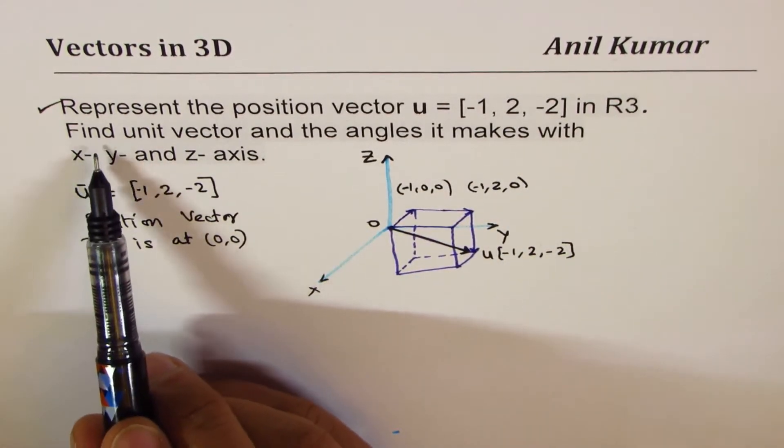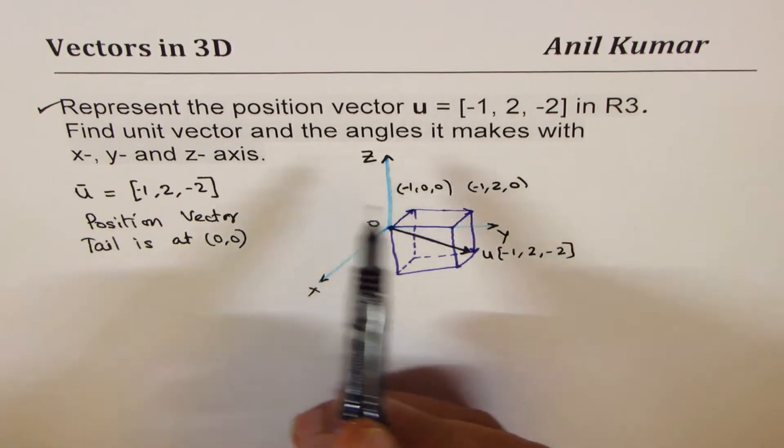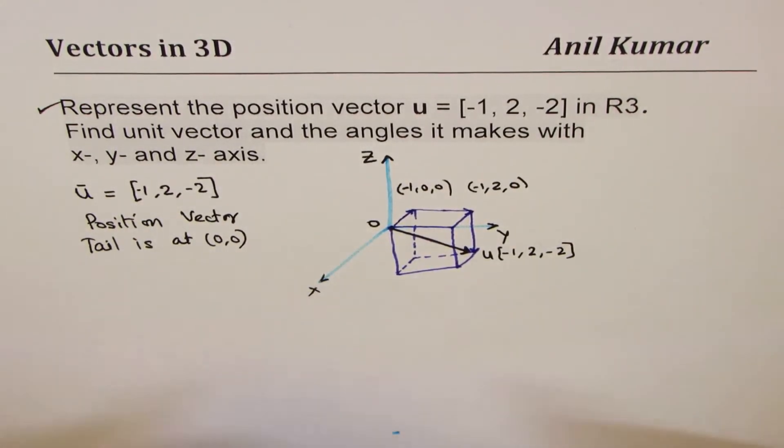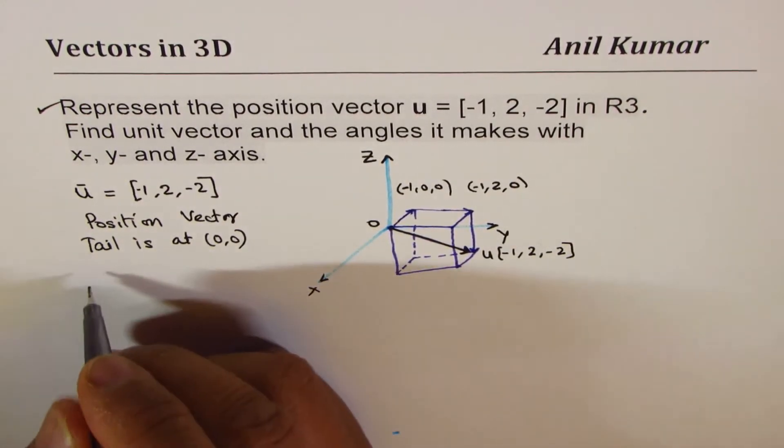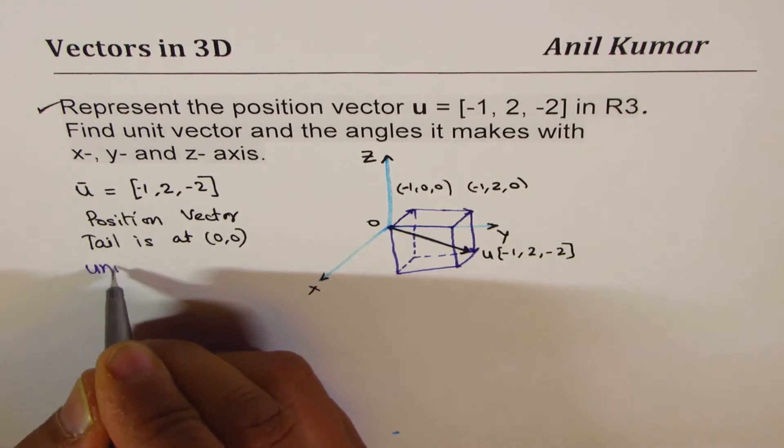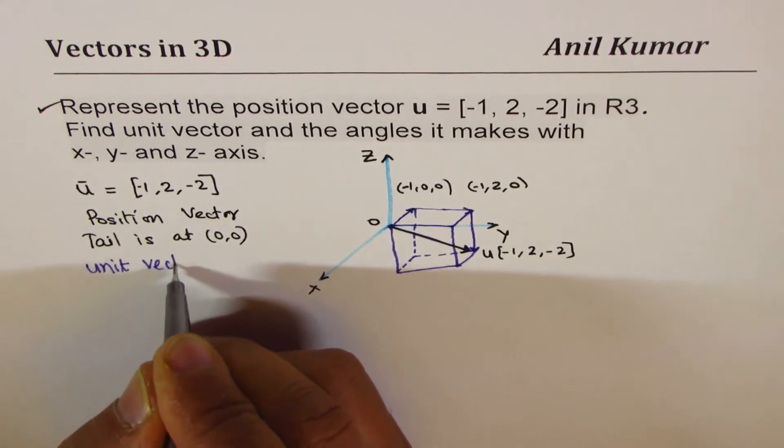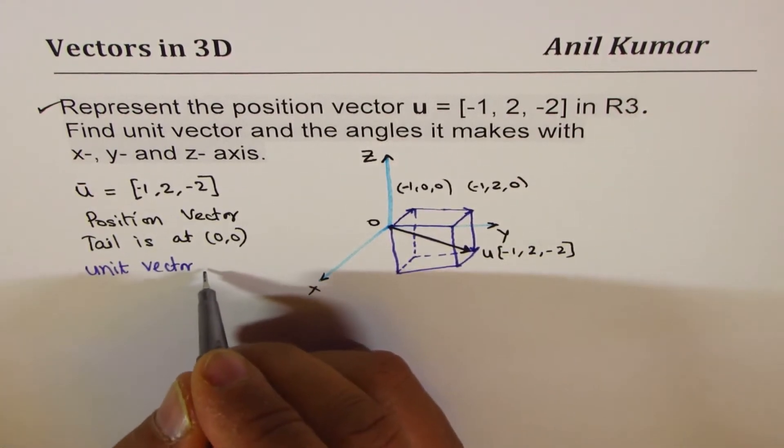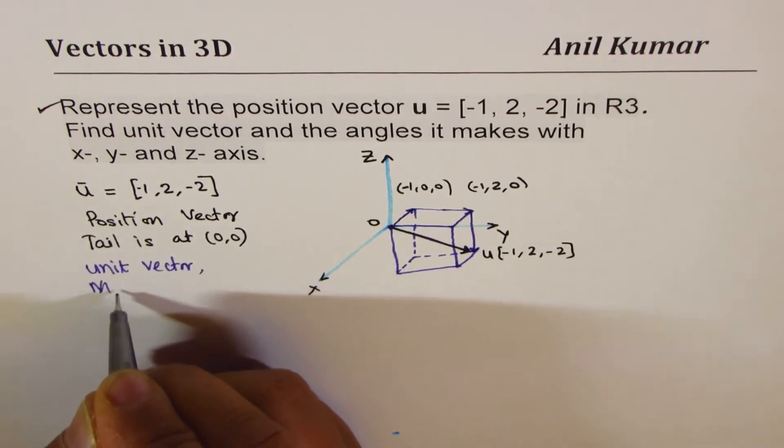Now, let's do the next part, which is find unit vector. So, what is a unit vector? Unit vector should have magnitude of 1. That is what unit vector is, but same direction.